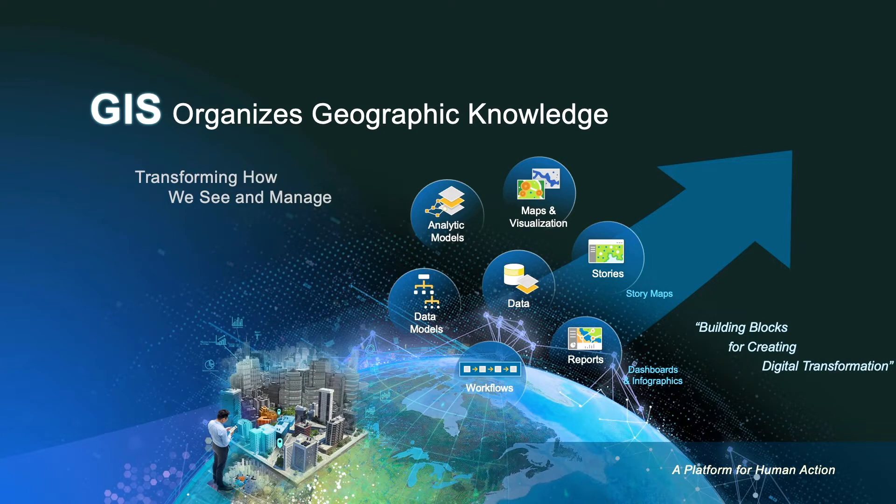GIS organizes geographic knowledge — that is the data part. It analyzes how we describe the data in models, and analyzes those models for making forecasts and doing analytics. It is a foundation for map knowledge, the way that we understand things through reports and workflows. It's really about digitally transforming these sorts of activities, which are prolific in every one of your organizations, into a kind of platform for more effective, more intelligent, smarter action.